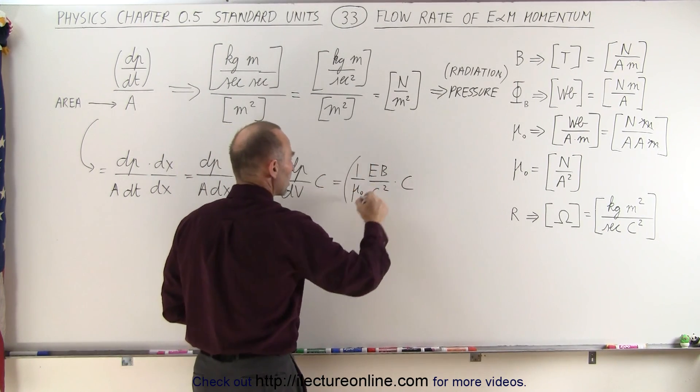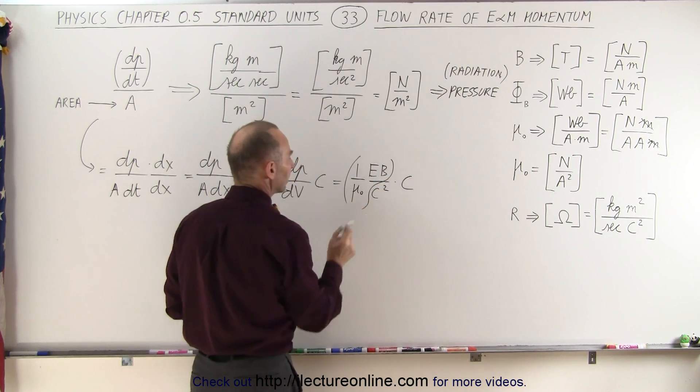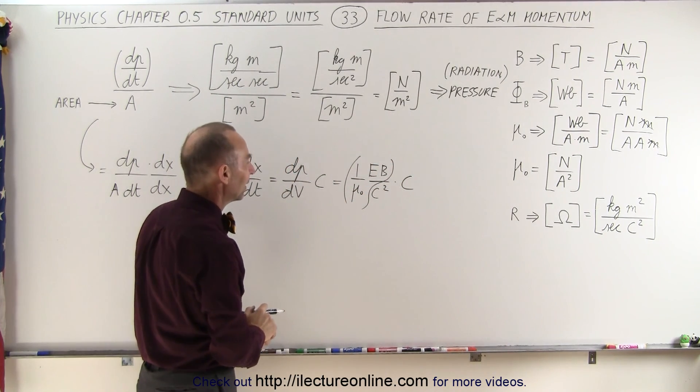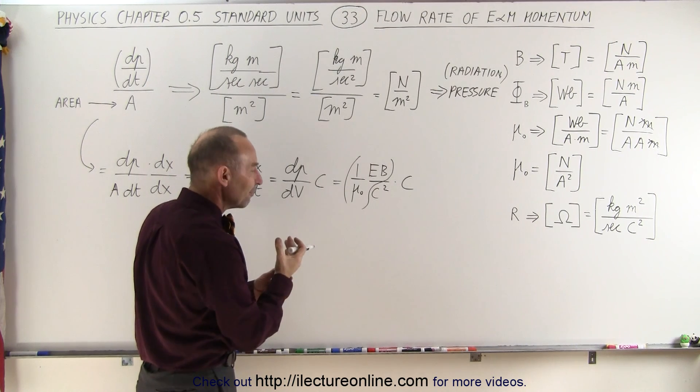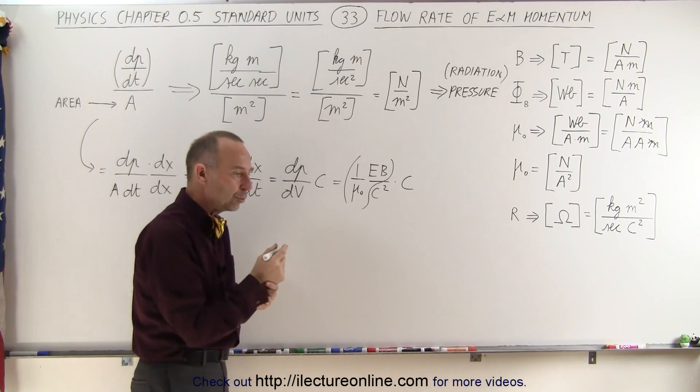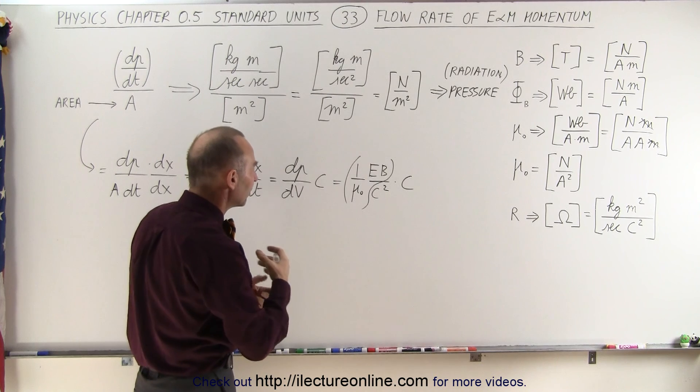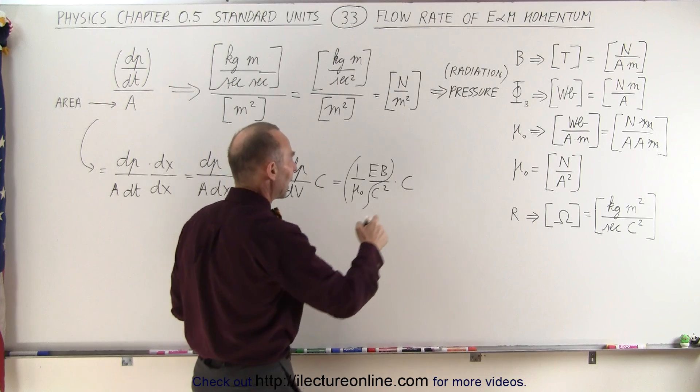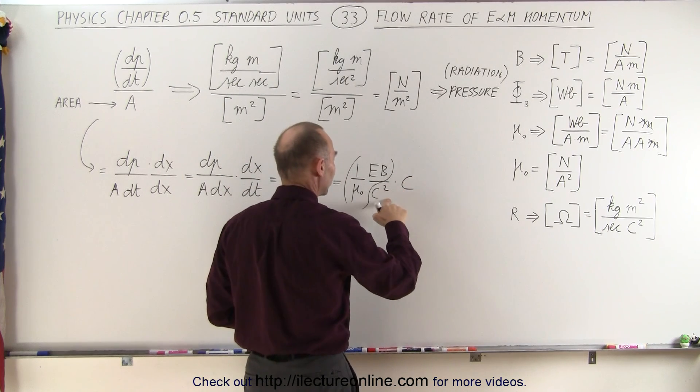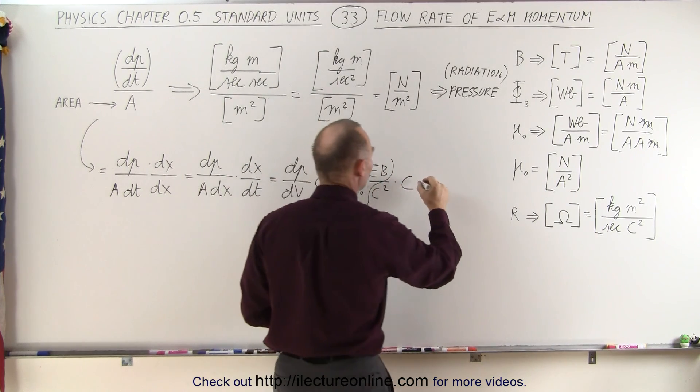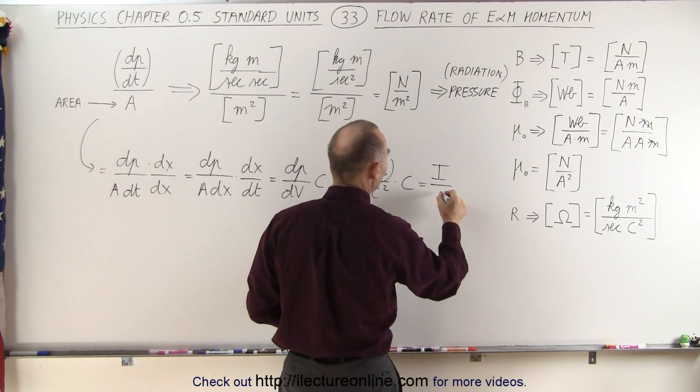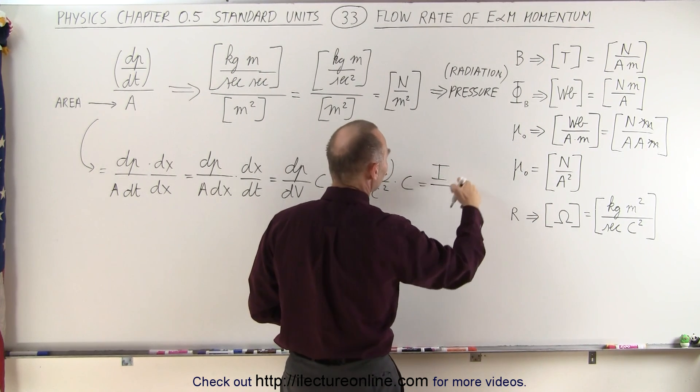Now this quantity right here, between the outlined parentheses so to speak, well that is equal to the Poynting vector, which is also equal to the intensity of the electromagnetic radiation. Which means that we have a c in the numerator, a c squared in the denominator, and intensity. So this can be written as the intensity of the electromagnetic radiation divided by c, or times c over c squared, which is the same as divided by c.